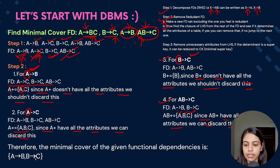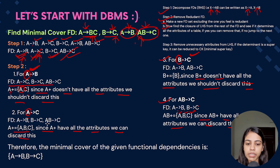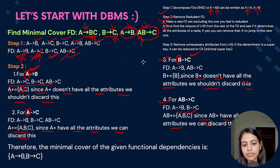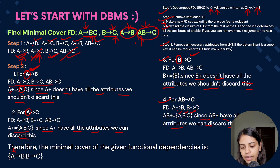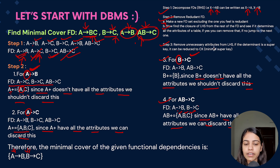From the final result, the minimal cover is: A determines B and B determines C. We don't need to go to step 3 in this example because the LHS of all remaining dependencies has only one attribute, so there are no unnecessary LHS attributes to remove.